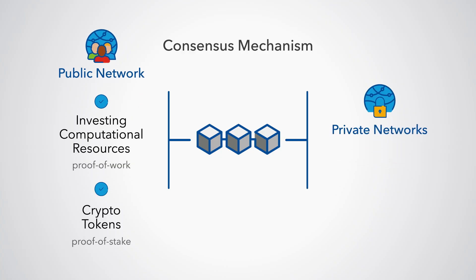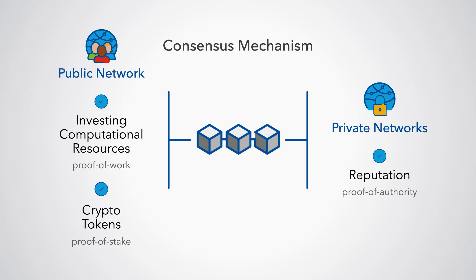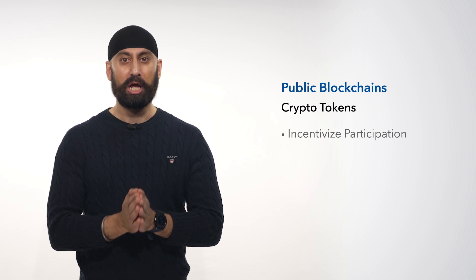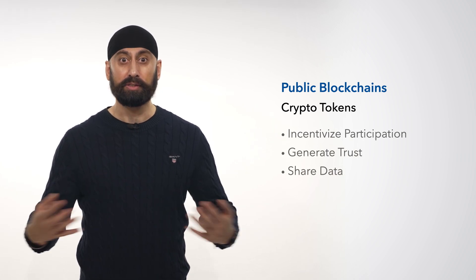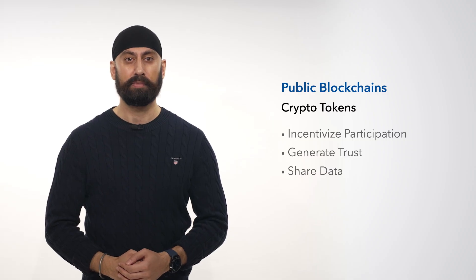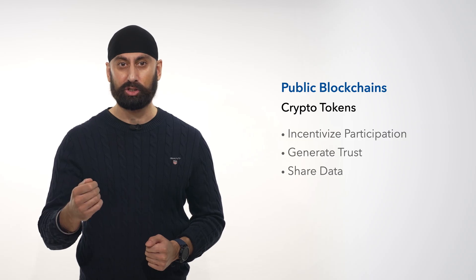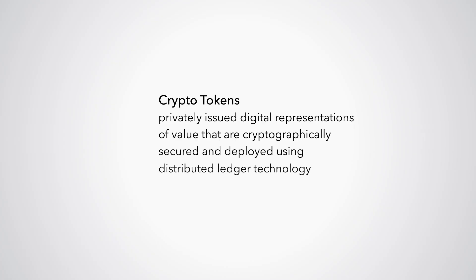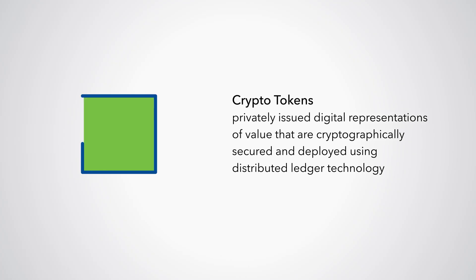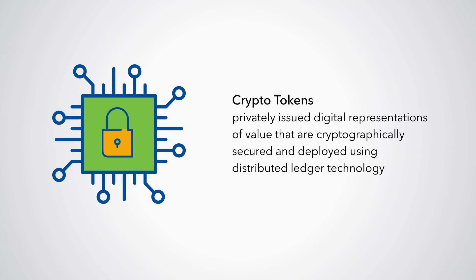In private networks, participants invest their reputation, called proof of authority. But bear in mind, we are simplifying here. Crypto tokens are necessary parts of public blockchains to incentivise participation, generate trust, and share data. And sometimes, we ascribe value to this data. They can also support more complex functions, like decentralised applications through smart contracts. We can describe crypto tokens as privately issued digital representations of value, that are cryptographically secured and deployed using distributed ledger technology.